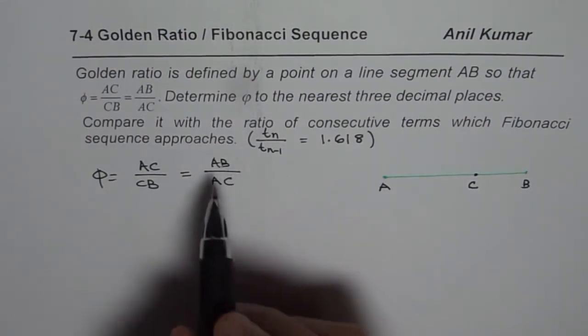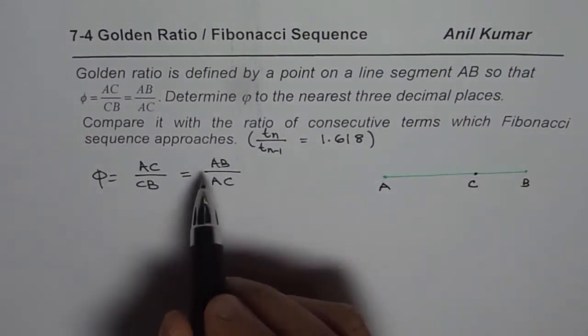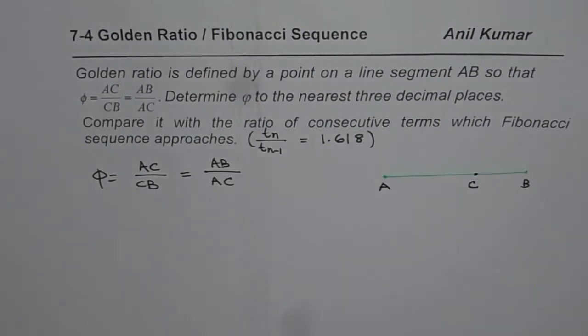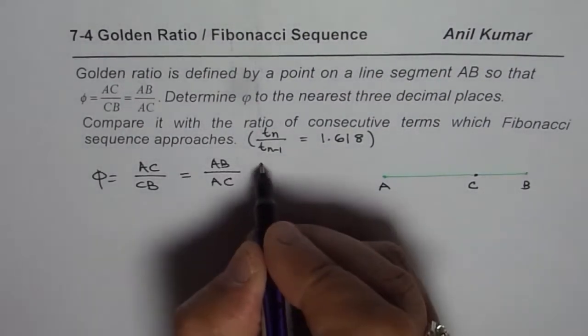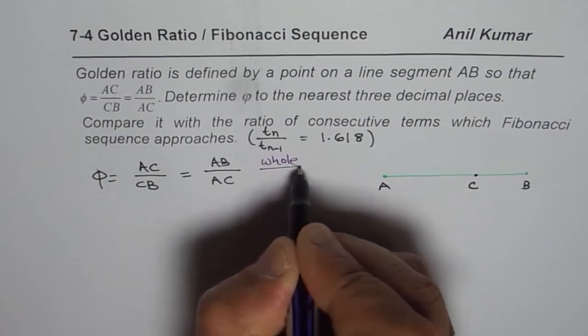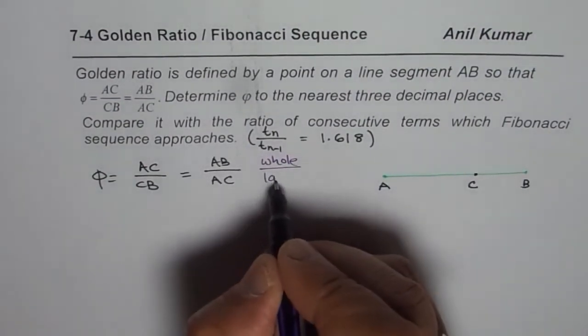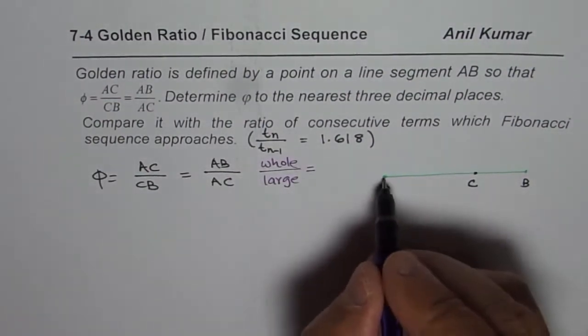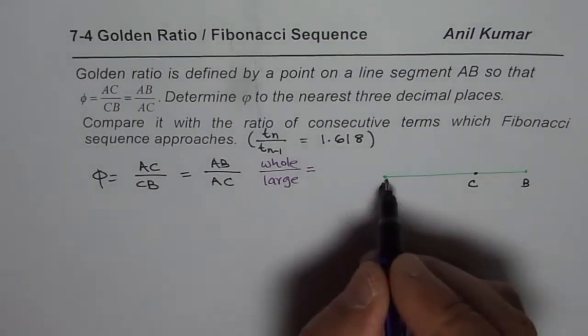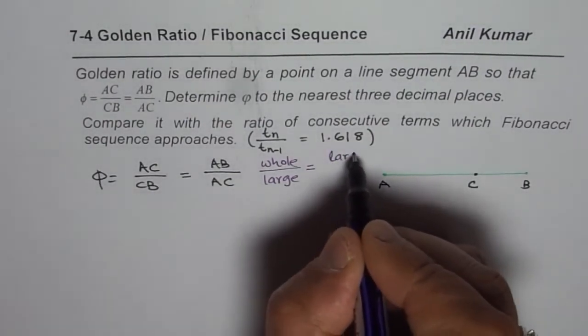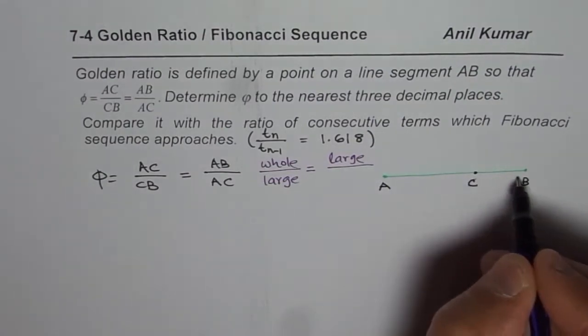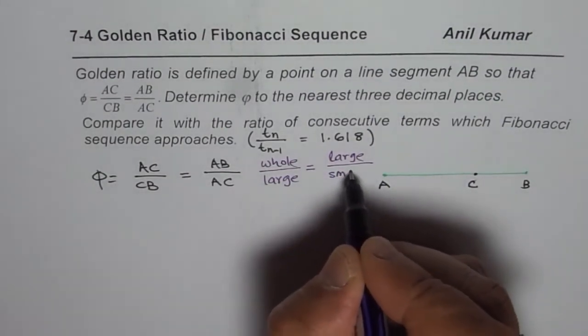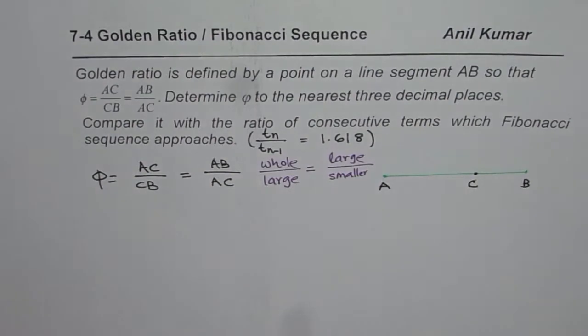So another way to remember this is, this ratio is basically AB is the whole line. I could write this ratio as, let me rewrite this in the reverse order. AB is whole over the larger part, AC is the larger part, equals to larger part over the smaller part. So AC is the larger part over CB, which is smaller part. So that is how you can remember the ratio very easily.